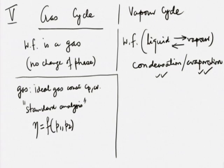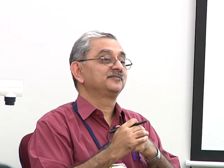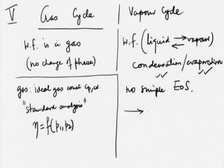In a vapor cycle, because vapor is involved and condensation and evaporation are involved, there is no simple equation of state — whether it is water for power plants or any refrigerant for refrigeration plants. So every case will have to be worked out individually. We have a formula for the efficiency of a standard Otto cycle and a standard Brayton cycle, but we do not have a formula for the efficiency of a standard Rankine cycle or the COP of a standard vapor compression cycle. No simple EOS, so we have to work out each case.